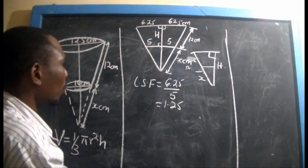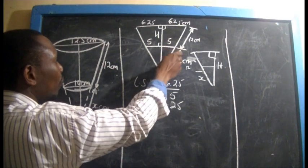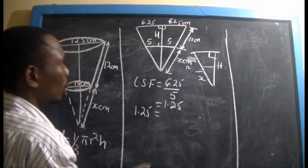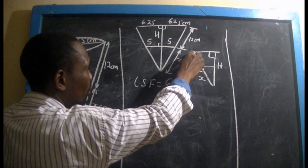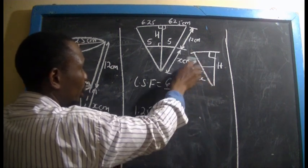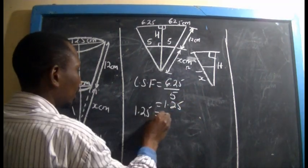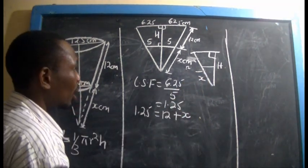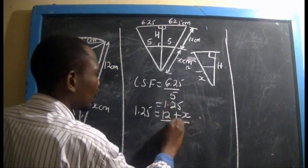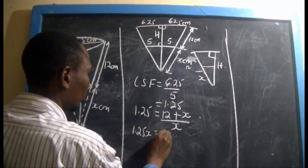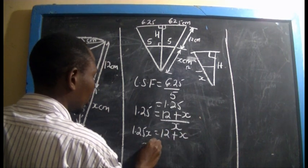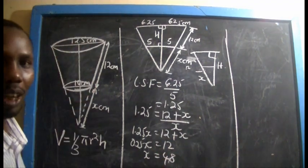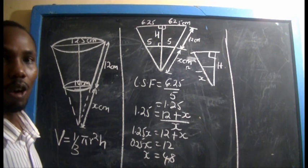So the linear scale factor equals 1.25. Next, we apply this same concept to find the value of x. We say 1.25 equals the whole slant height of the big cone, which is 12 plus x, over the slant height of the small triangle, which is x. Solving this, we find that the value of x equals 48.